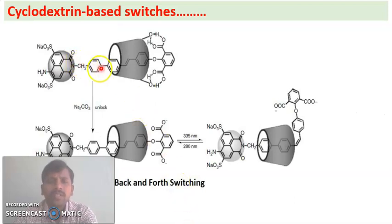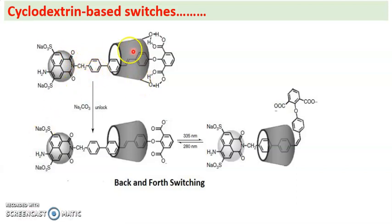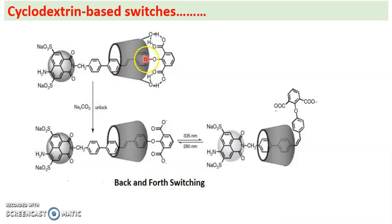We will discuss back-and-forth switching with an example: a light-driven lockable molecular switch — a rotaxane-based molecular switch. In acid medium, hydrogen bonding exists between the cyclodextrin OH groups and the stilbene COOH groups. The components are: cyclodextrin, 4-amino-1,8-naphthalimide sulfonate (ANS), a diphenyl part, and a stilbene unit. In acid medium this system is lockable.